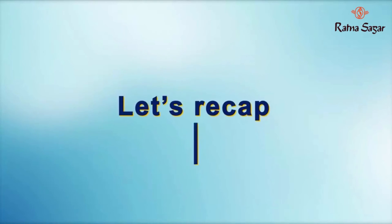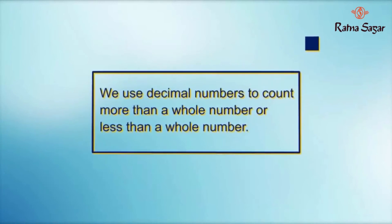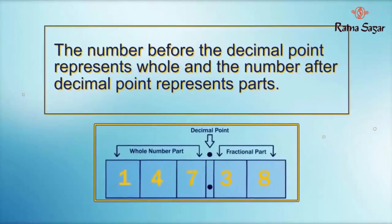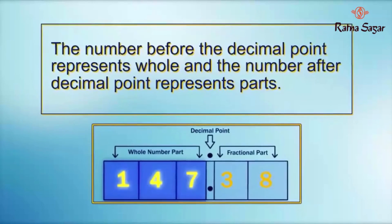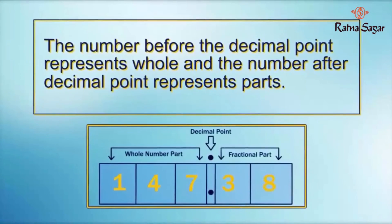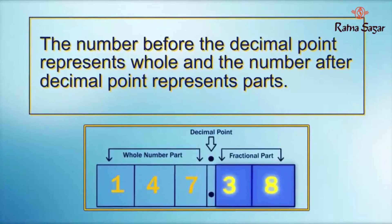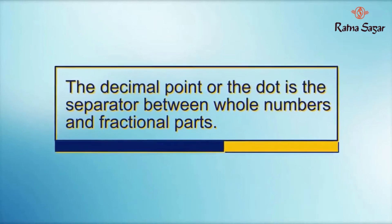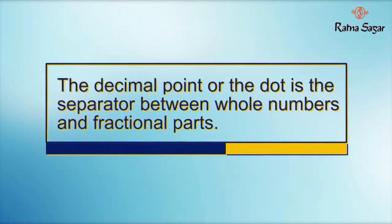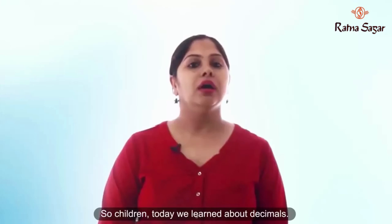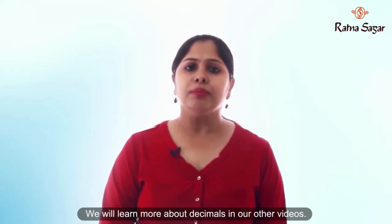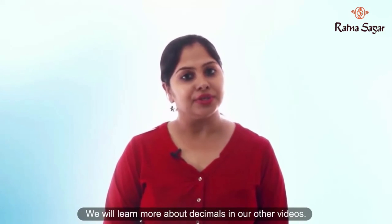Let us recap. We use decimal numbers to count more than a whole number or less than a whole number. The number before the decimal point represents the whole, and the number after the decimal point represents parts. The decimal point is the separator between whole numbers and fractional parts. So children, today we learnt about decimals, and we will learn more in our other videos.